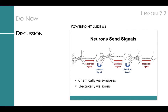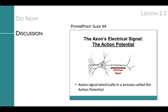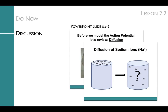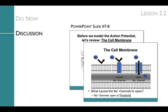The discussion starts with an introduction of the types of signals neurons send. Neurons signal chemically via synapses and electrically via axons. This lesson focuses on how neurons send electrical signals down their axons, while Unit 3 will focus on chemical signals across the synapse. Slide four introduces students to the term action potential — the name of the axon's electrical signal. The remainder of the discussion covers diffusion abstractly on slide 5 and specifically of sodium ions on slide 6, the impermeability of cell membranes on slide 7, and the need for ion channels on slide 8.